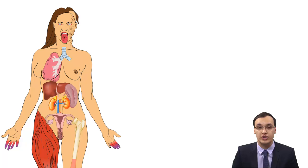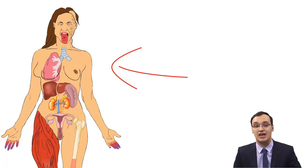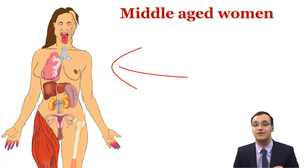In conclusion, there is exocrine gland destruction in Sjogren's syndrome. This picture shows the most common symptoms and organs affected in this disease. We see a middle-aged woman because females are affected more than males, and usually these females are middle-aged.